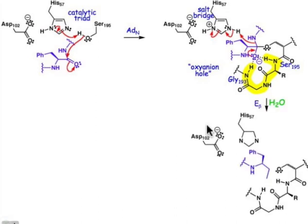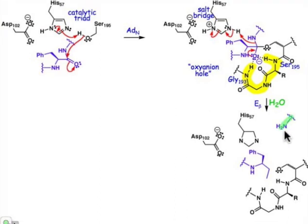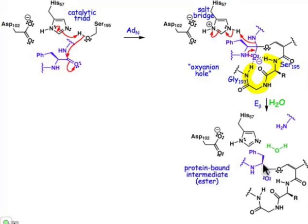The next step is a reversal of the electron flow — just turn that electron flow right around and we're going to do a beta elimination. Go ahead and highlight that bond — that's the bond that leaves. Now we're using that imidazolium group, which now has a positive charge, as the general acid. So it's a general acid catalyzed beta elimination, and as a consequence we end up making the released peptide amino side of the peptide fragment and an ester group between the carbonyl and that serine oxygen atom.